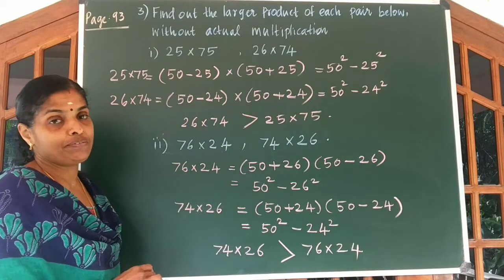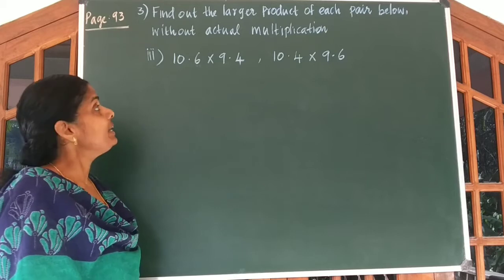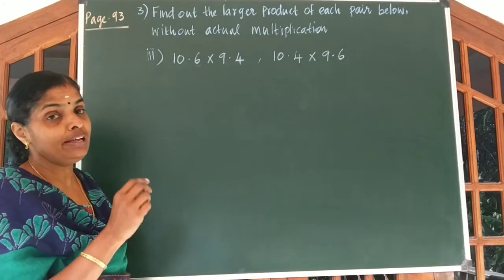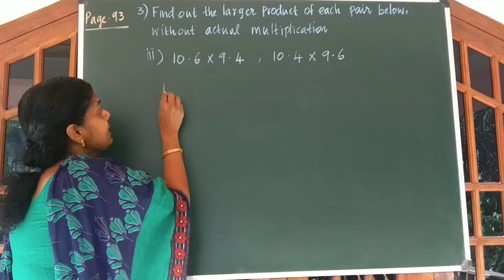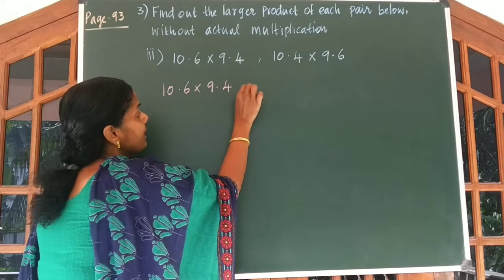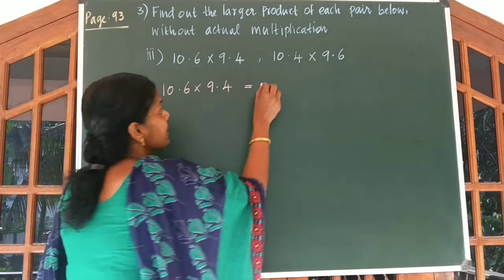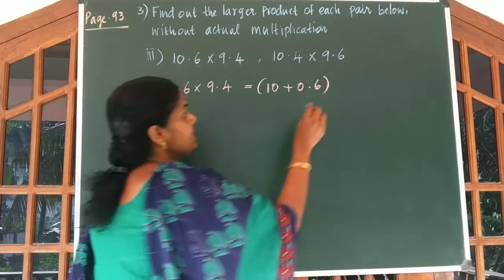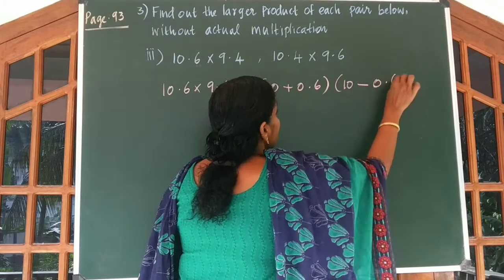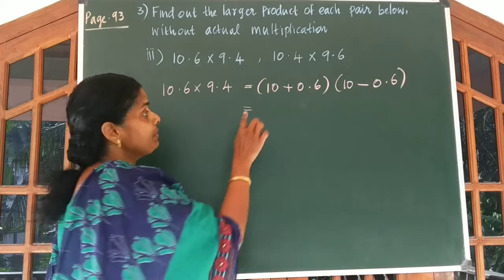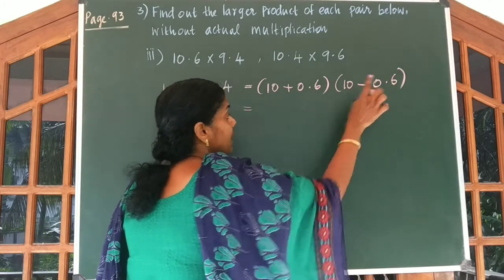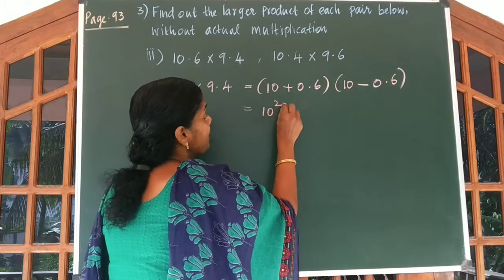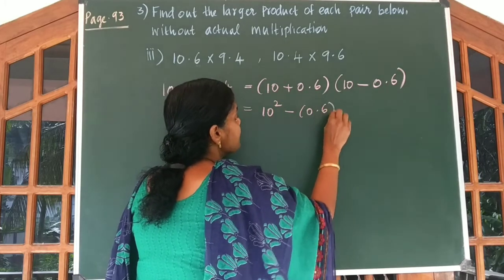Look at the third part of the question: 10.6 into 9.4 and 10.4 into 9.6. We have to find the larger product. Now 10.6 into 9.4 can be written as 10 plus 0.6 into 10 minus 0.6, which is of the form (A plus B) into (A minus B), giving A square minus B square. So we get 10 square minus 0.6 squared.